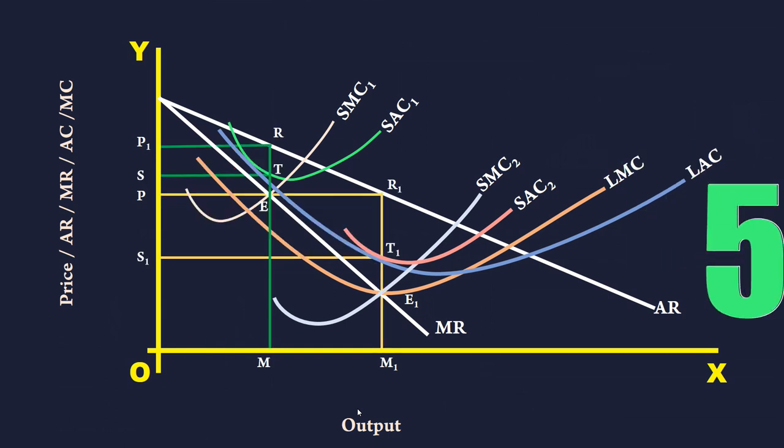5. In the short-run, monopoly firm uses its existing plant to maximize its profit. It is depicted by the SAC-1 and SMC-1 curves. In the long-run, the firm changes the plant size. It uses the long-run average cost and the long-run marginal cost curves to choose an appropriate plant that will maximize its profit. The new plant, a larger size one, is represented by SAC-2 and SMC-2 curves.